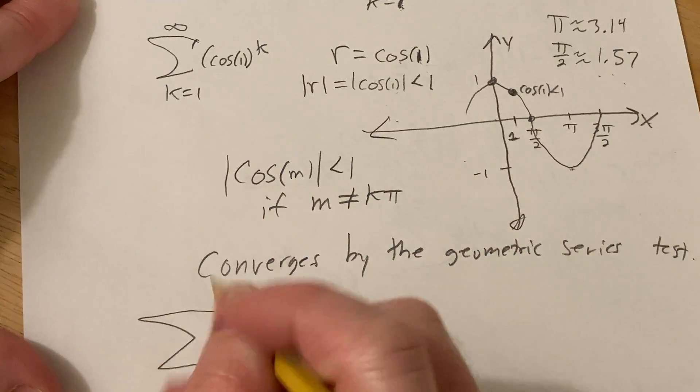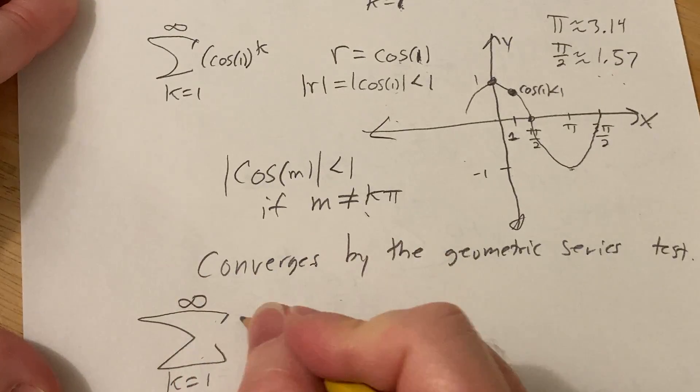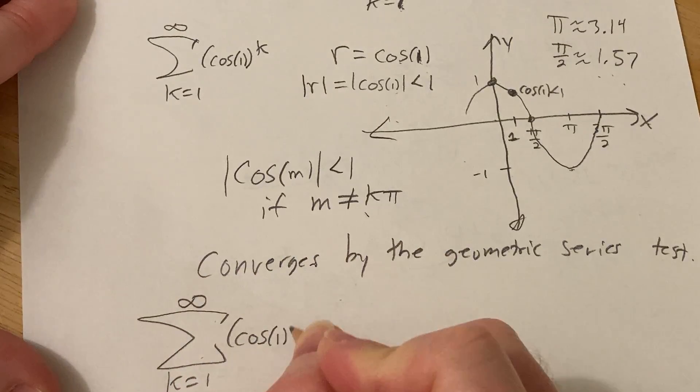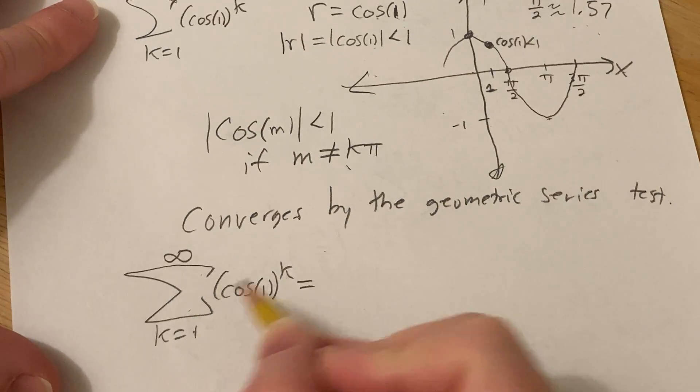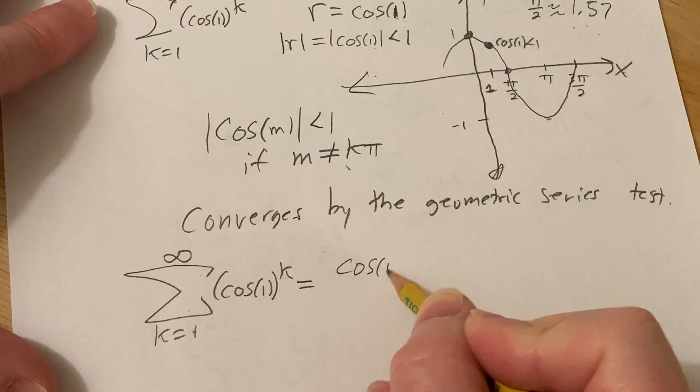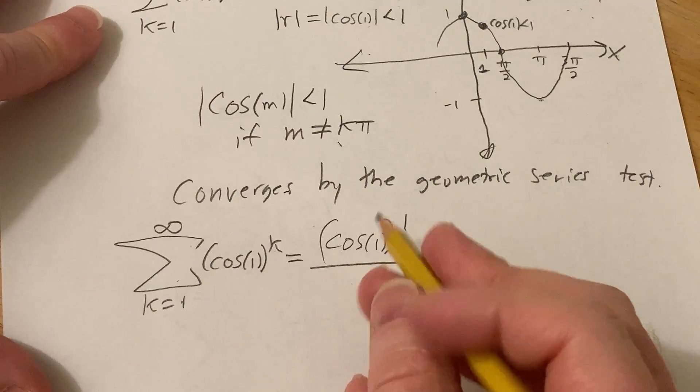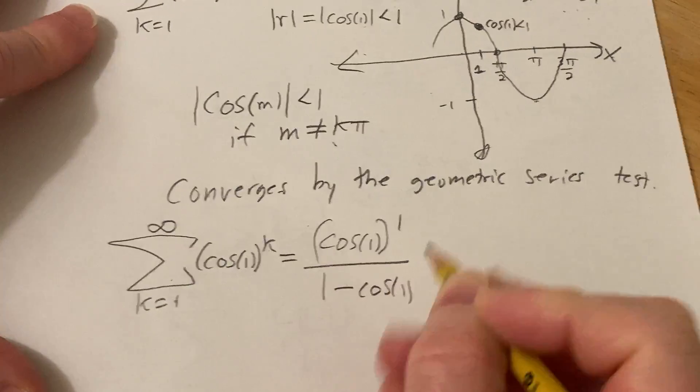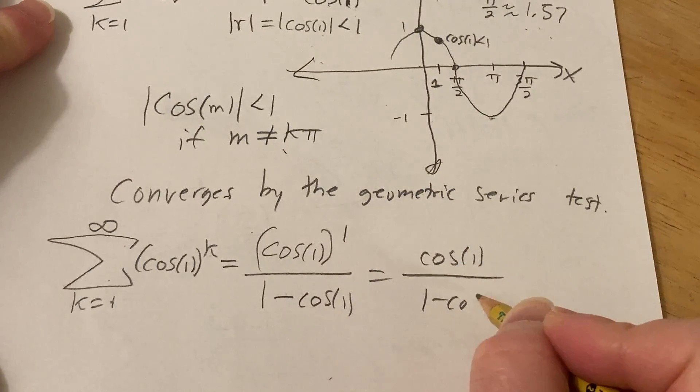So let's use the trick I showed you to find the sum of the series. So we go from 1 to infinity, and then we have the cosine of 1 to the k. And the trick says that you just take this number, and you put it where the k is, and it goes up top. So you get cosine of 1 to the first power. Then you divide by 1 minus r, so 1 minus cosine of 1, like that. So you just get cosine of 1 over 1 minus cosine of 1.